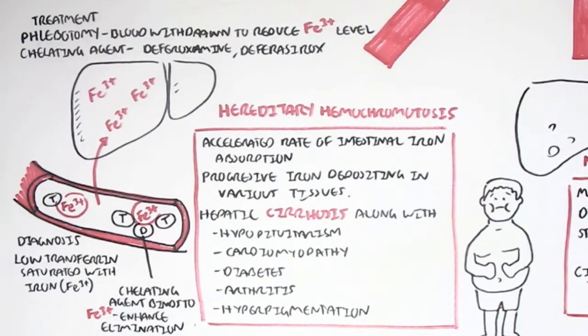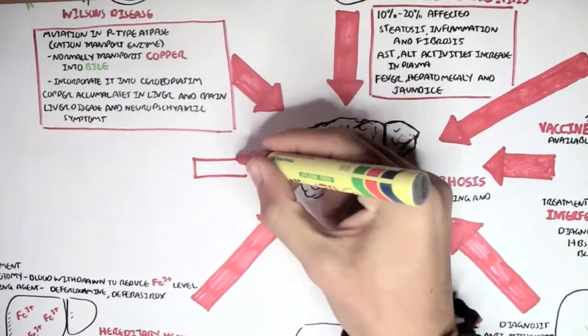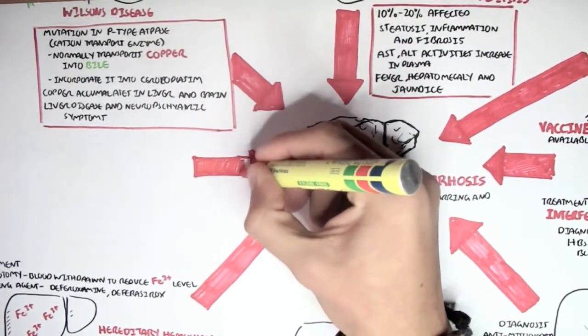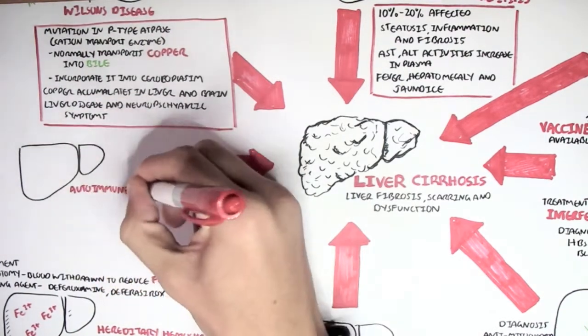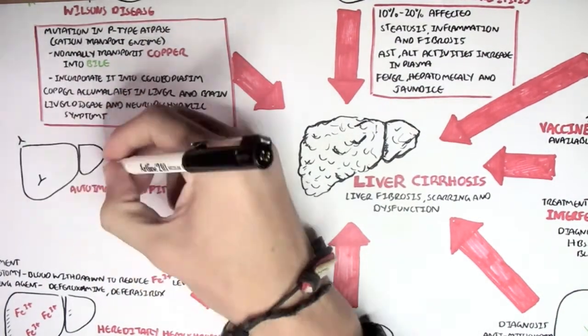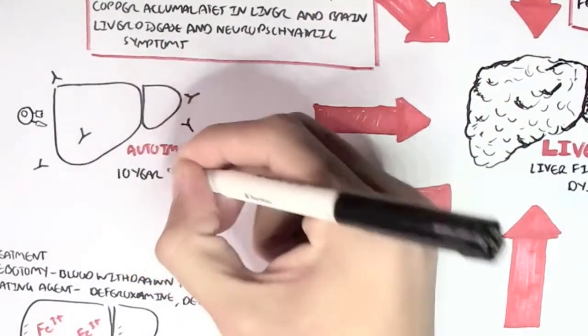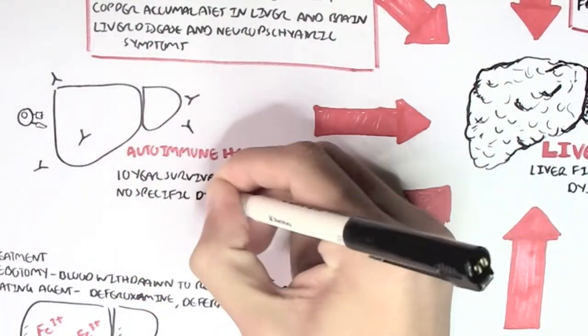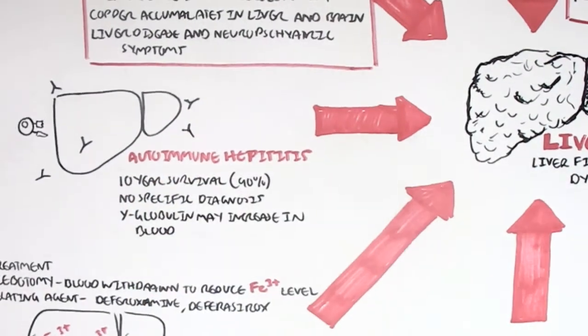The last cause of cirrhosis that can fit into this diagram is autoimmune hepatitis, where we have our own antibodies and immune cells attacking hepatocytes, the liver cells. There is about a 10 year survival in 90% of the cases. No specific diagnosis. There can be an increase in gamma globulin levels in the blood which can be used for a diagnosis.